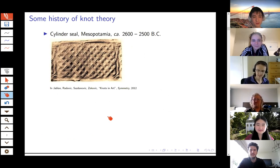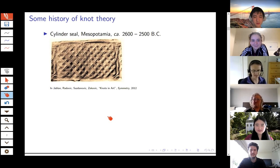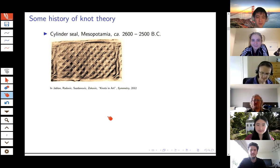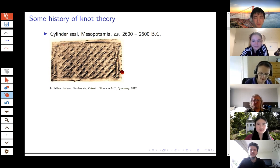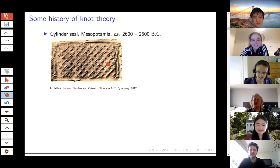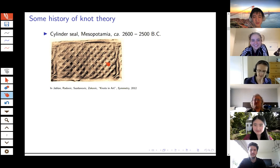A little bit of history of knot theory. People have been looking at knots for thousands of years. This is a picture of a seal from Mesopotamia around 2600 BC — it's a snake head, and the snake's body wraps around and forms a very cool knot. If the snake eats its tail, you have formed a knot. I found this to be a really interesting example because I have a research paper from a couple of years ago that looks at related knots. So we're all thinking about the same things.